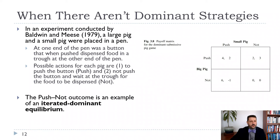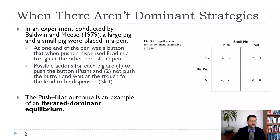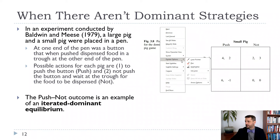We can cross out the small pig pushing — it's always better for the small pig not to push. Assuming the pigs can work this out (pigs are supposed to be pretty smart), the big pig is then just choosing between not pushing or pushing, and 2 is better than 0. So push becomes a dominant strategy for the big pig once we cross out the small pig pushing. We end up with the big pig pushing and the small pig not pushing as our Nash equilibrium.